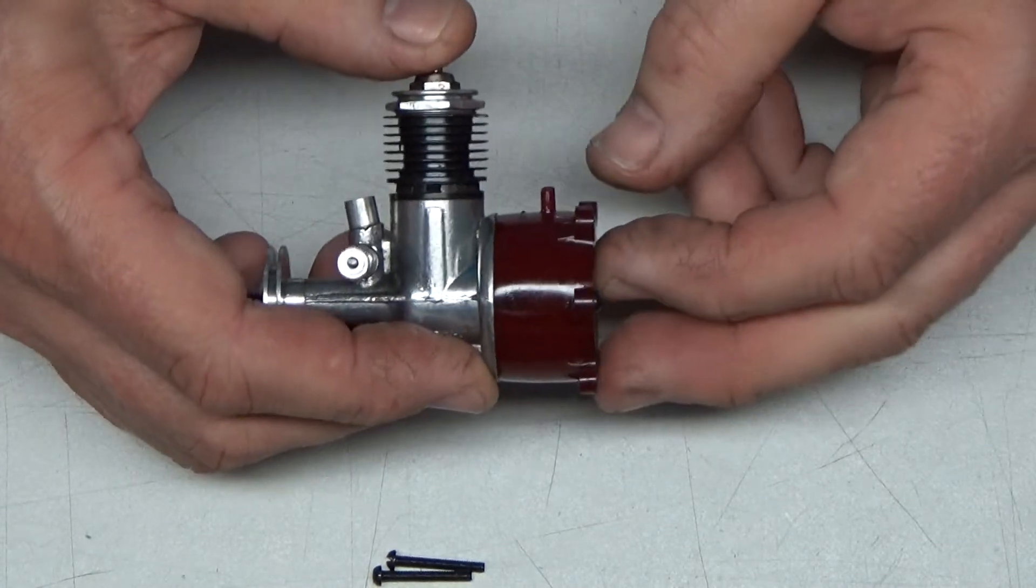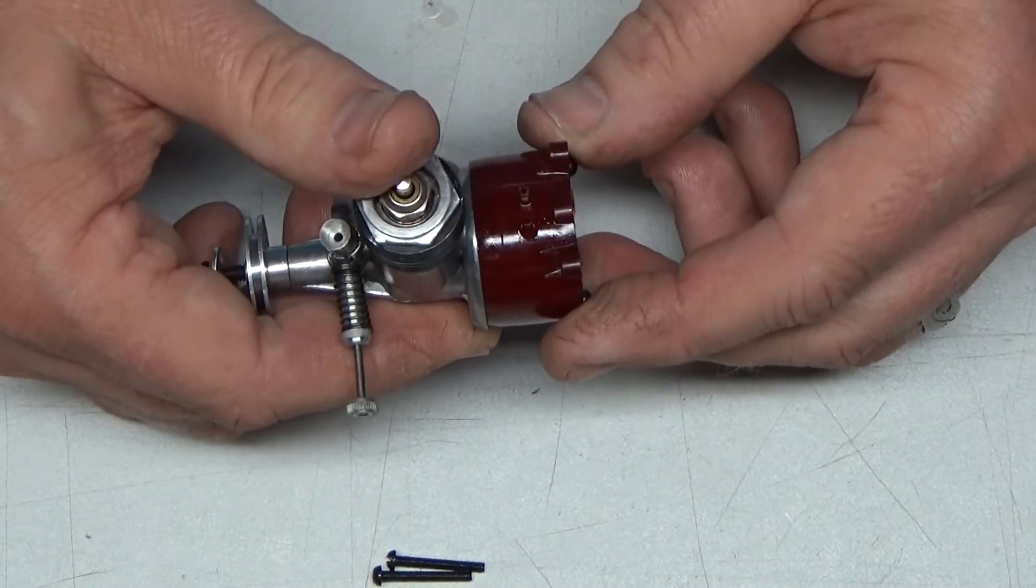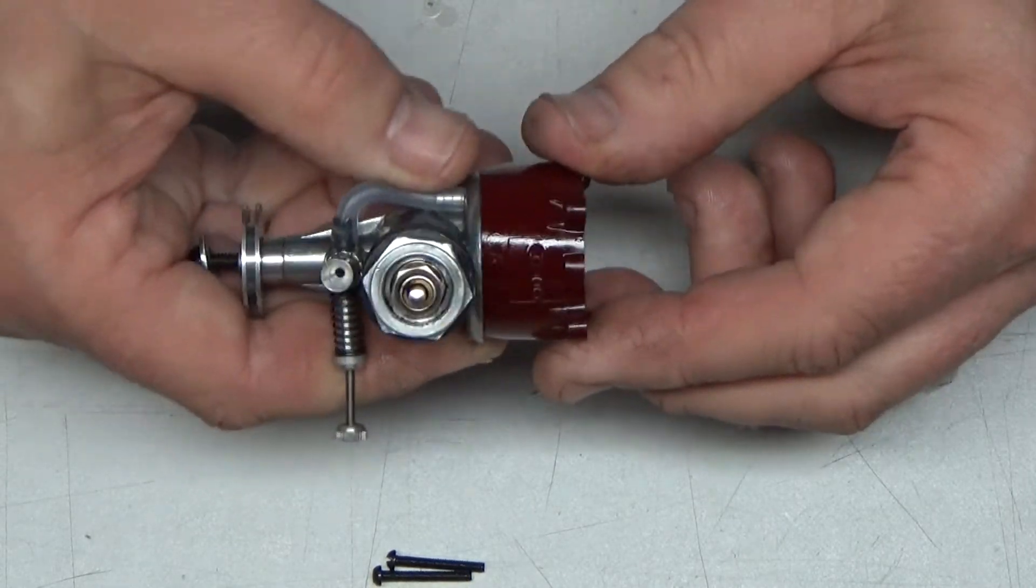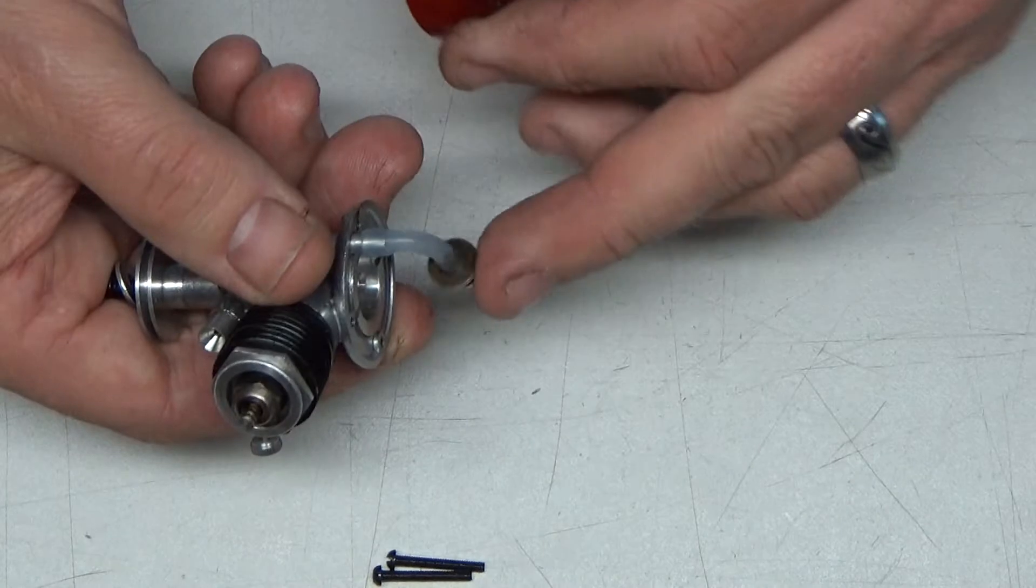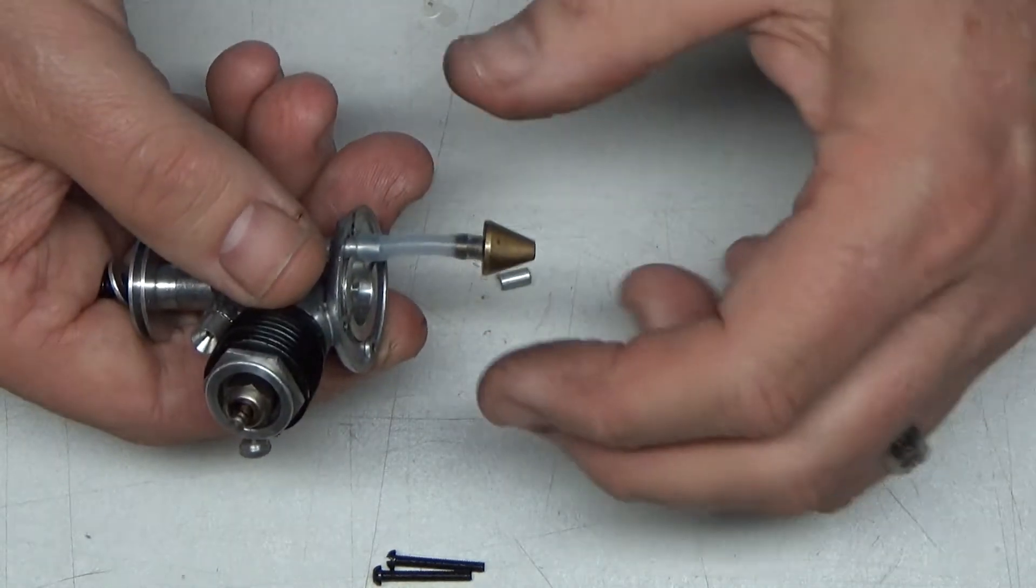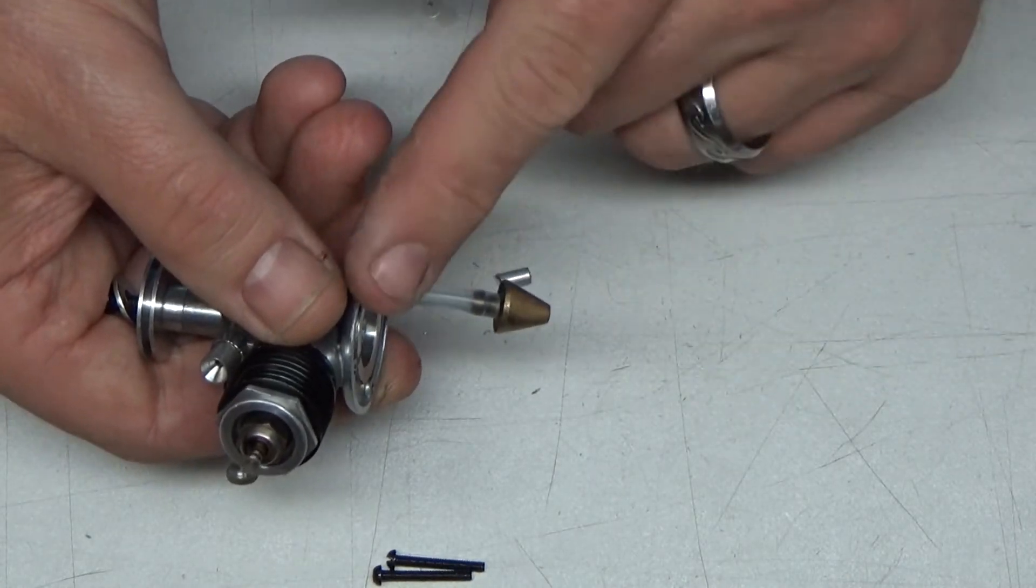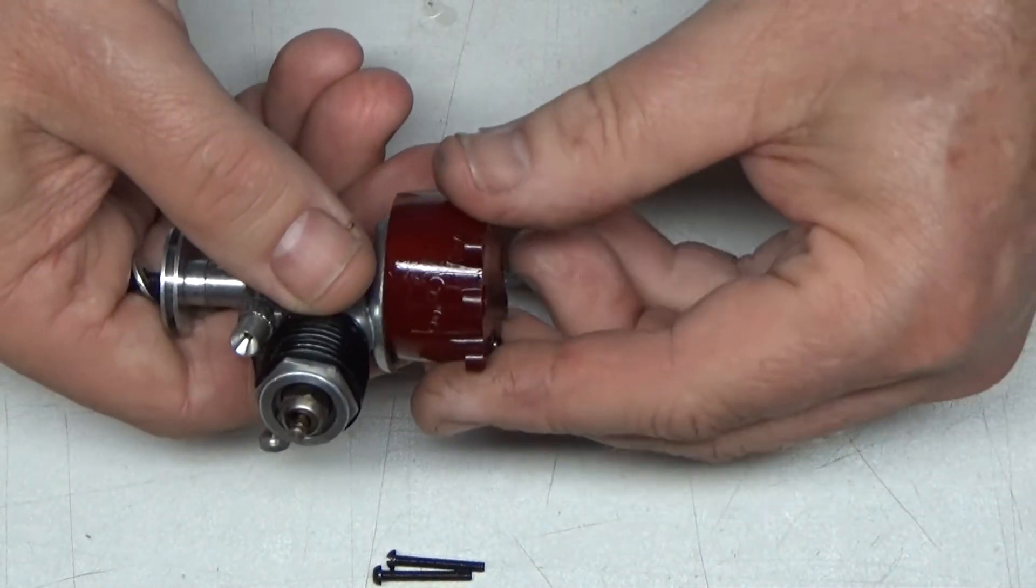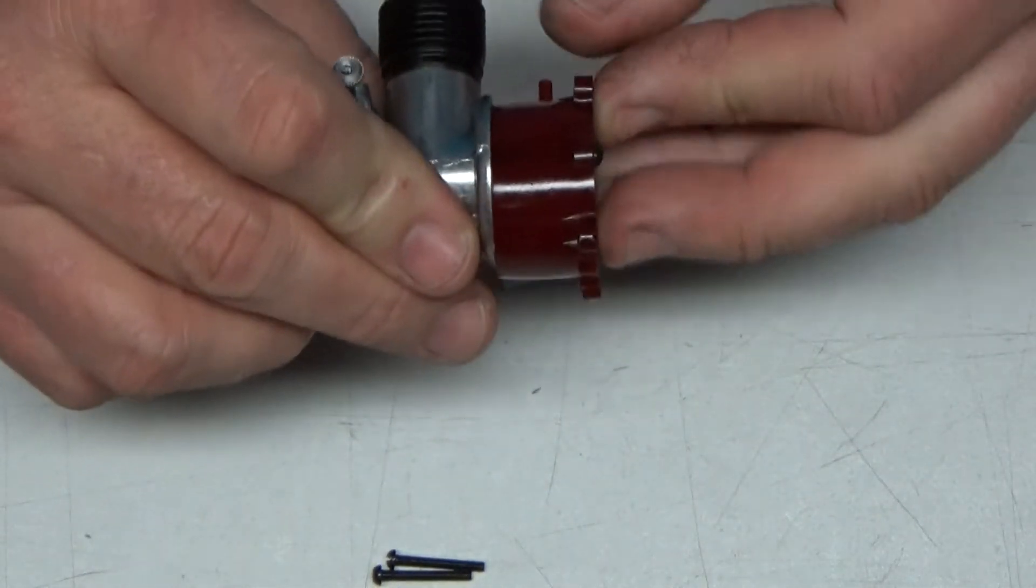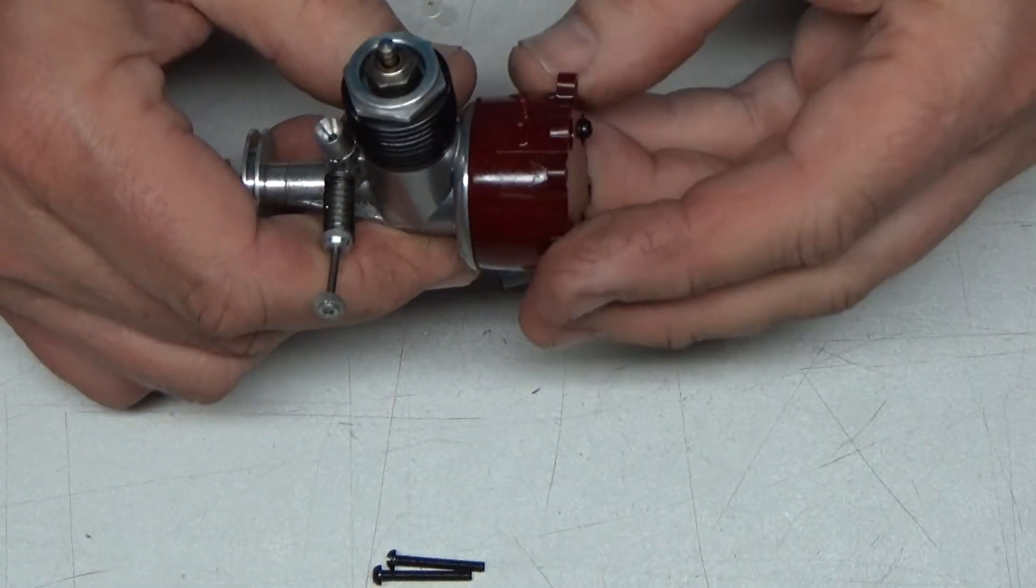Since I'm not planning on putting this in an airplane, I don't really care. Any time from now on that I run it, it's going to be on a stand. So, having the clunk at the bottom is fine. And even if I don't want to use the clunk, I can just as easily put a piece of fuel tubing on there and just have it do the same thing. Have it long enough so that the back of this tank bends it down so that it's at the bottom.